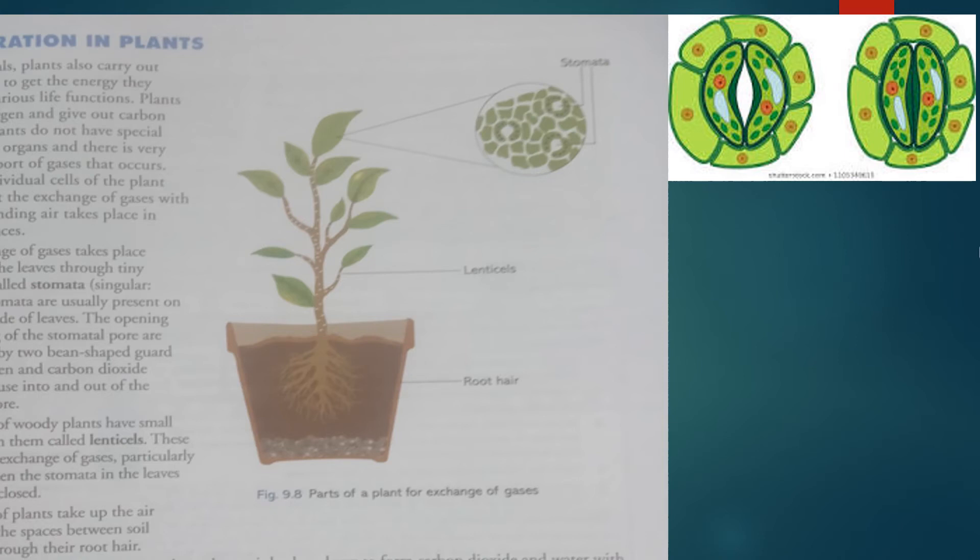Photosynthesis takes place during the day. Now let's discuss photosynthesis and respiration. We have learned that plants are autotrophs because they can make their own food by the process of photosynthesis.